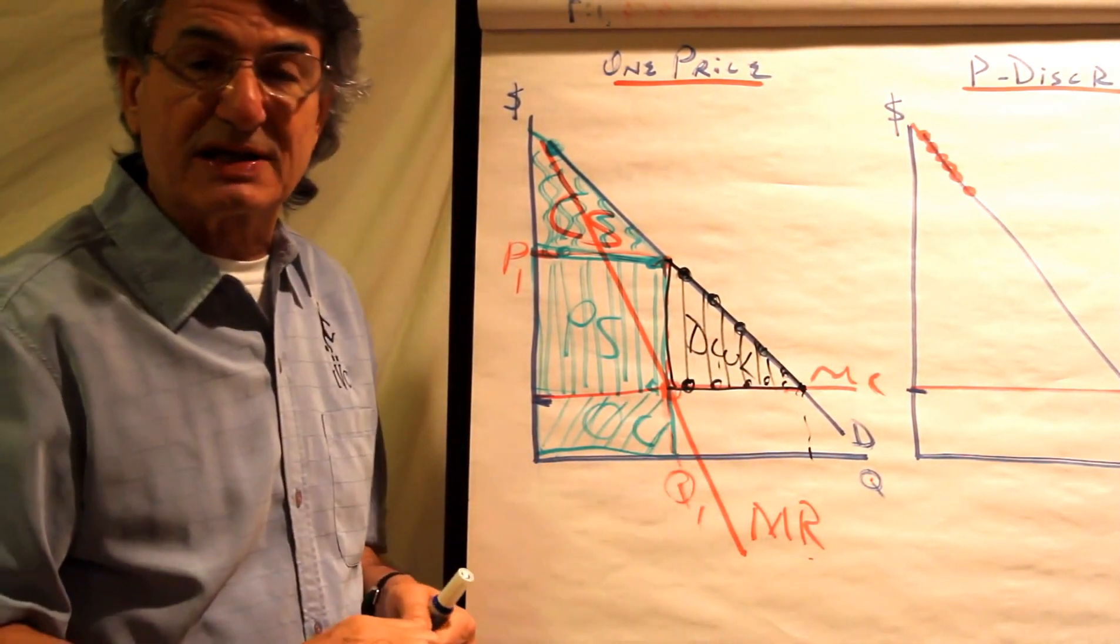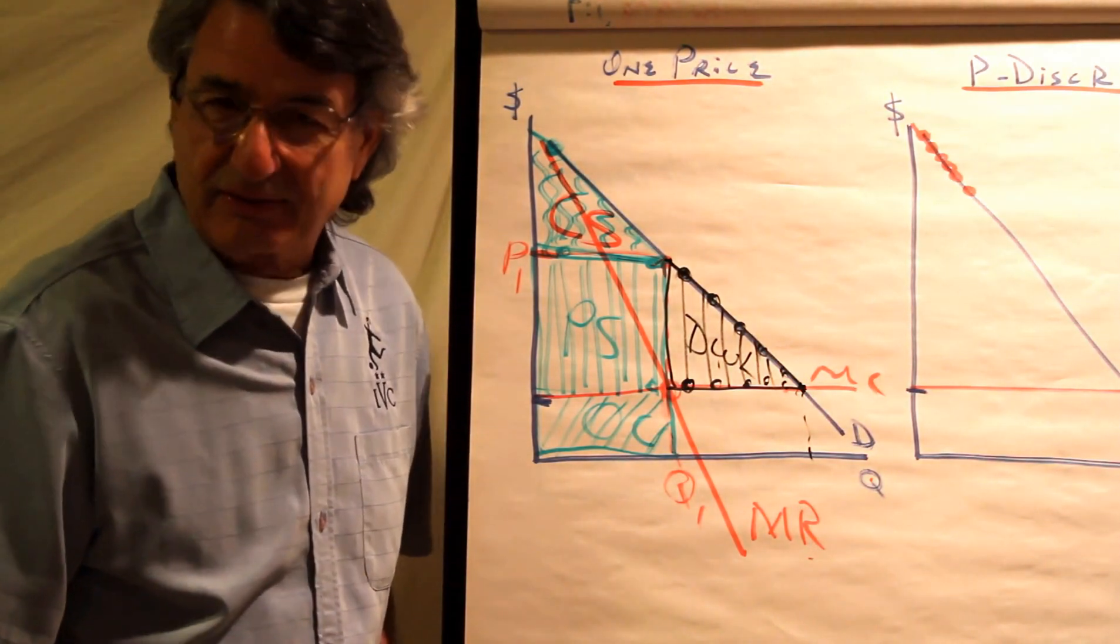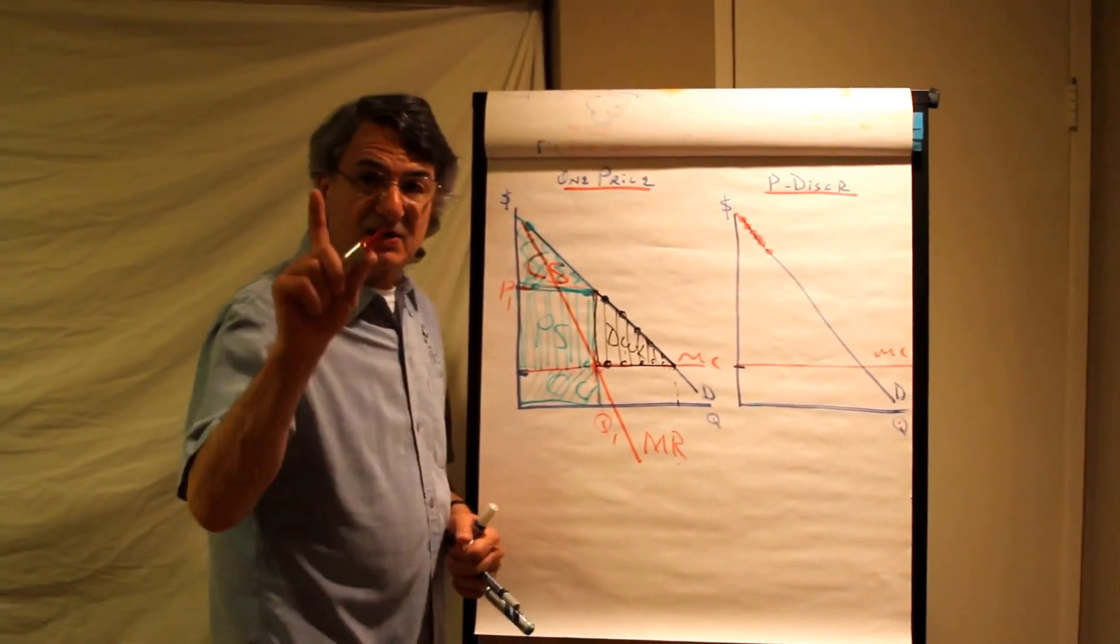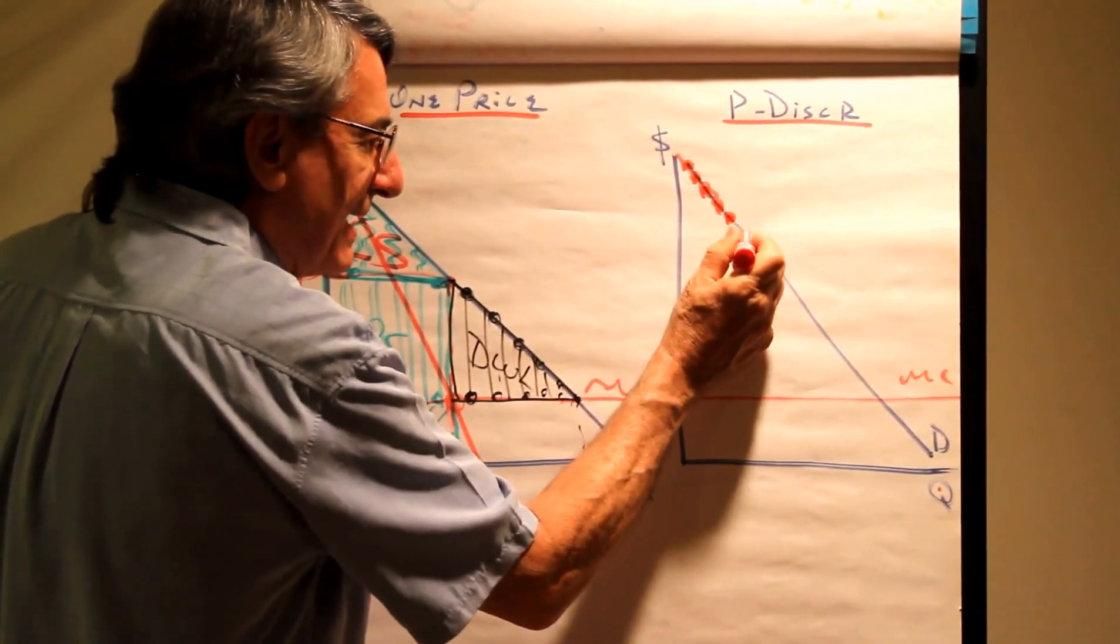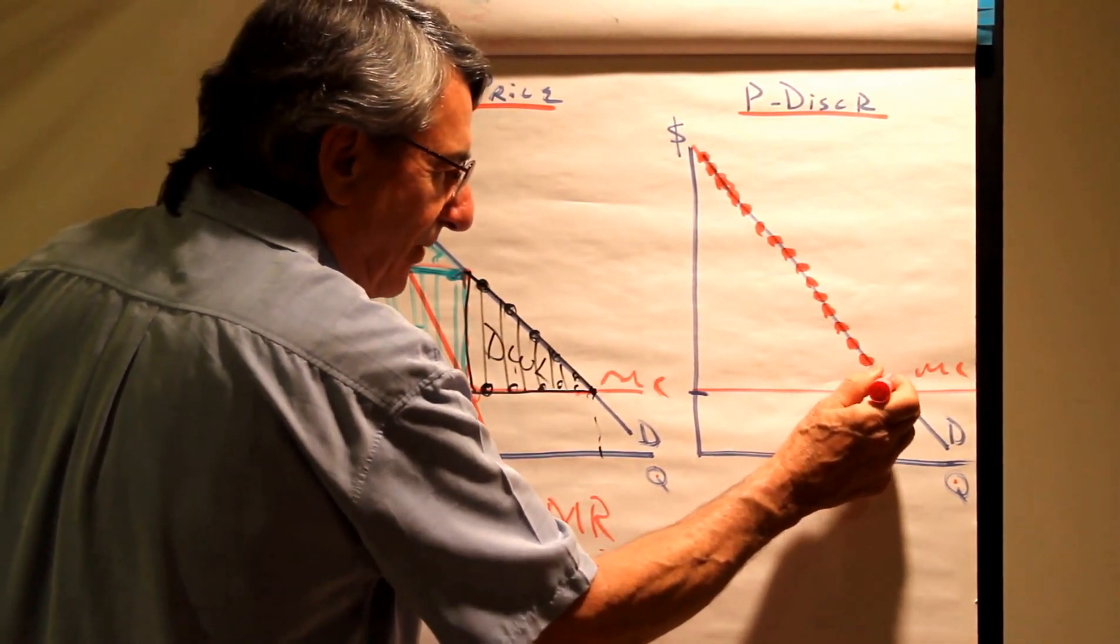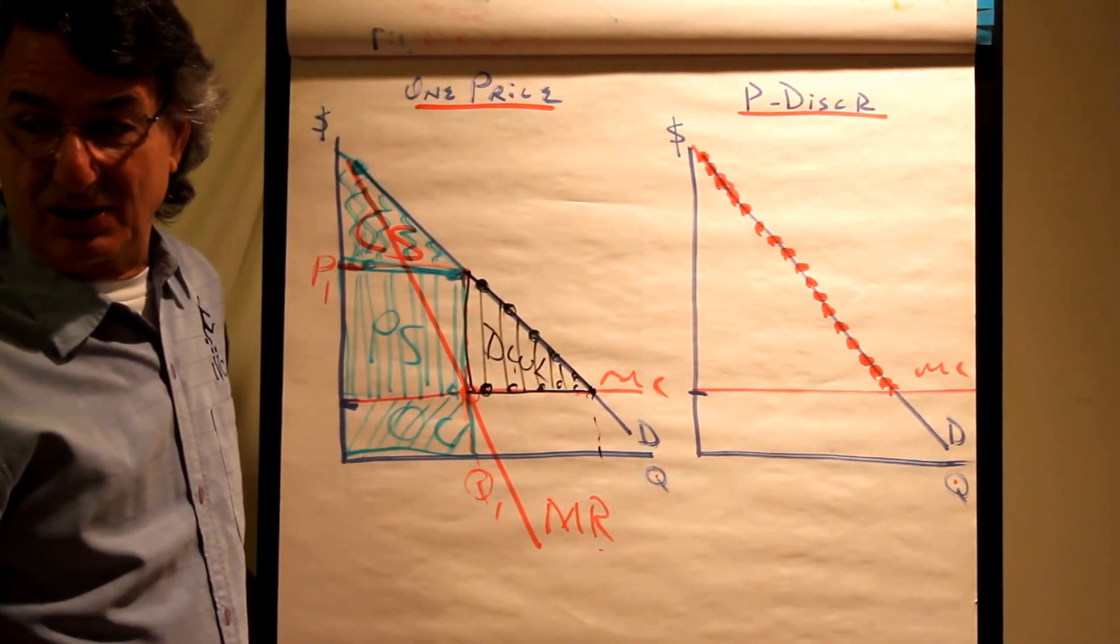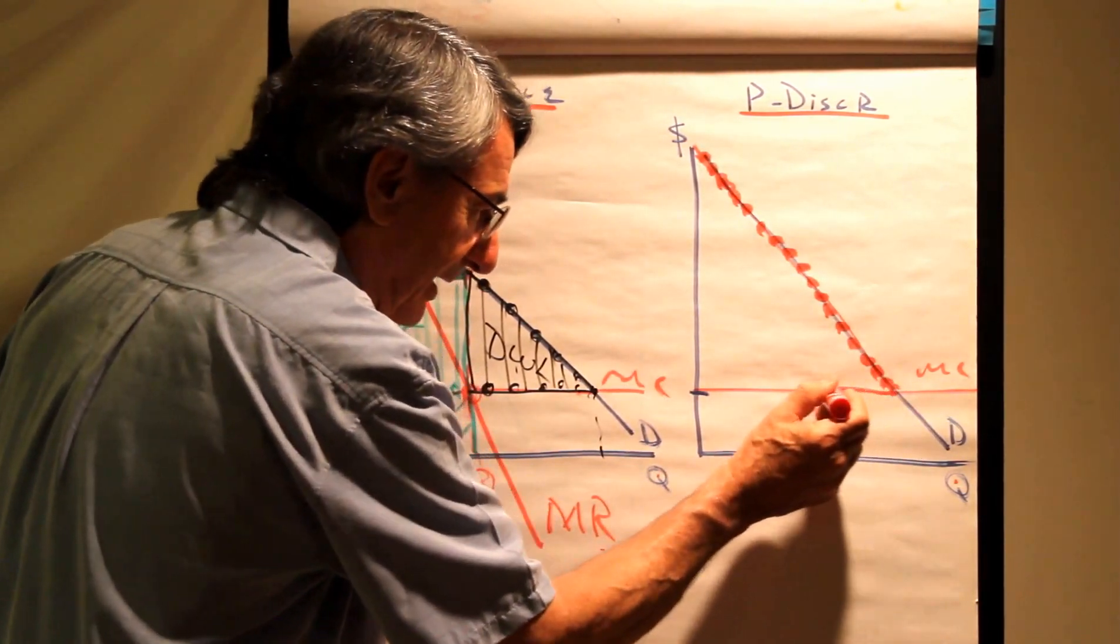Now let's turn the seller into a perfect price discriminator. That means they will charge each person who buys it the maximum they are willing to pay for it. Something like when you go to buy a car, do they try and figure out what is the maximum you will pay? Or if you go to college and you apply for financial aid, they want to charge you the highest you're willing to pay.